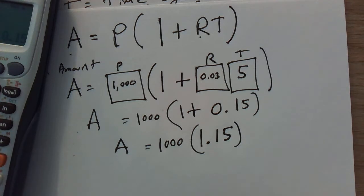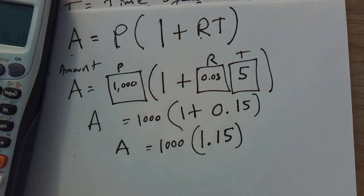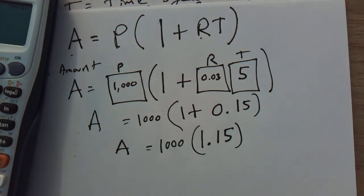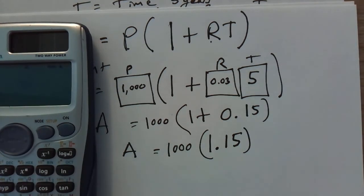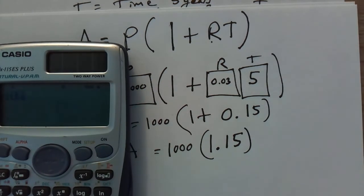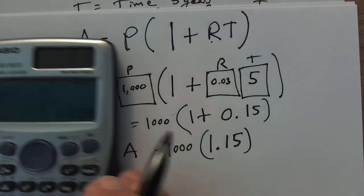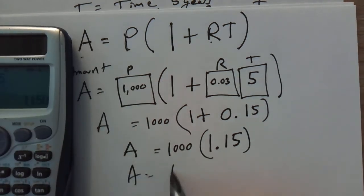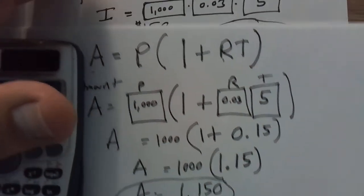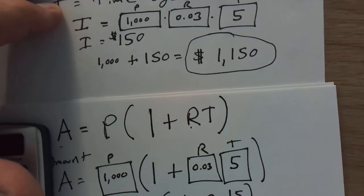The next step is we're going to multiply the 1,000 times 1.15 and that is equal to an A of $1,150 and as you may recall that is the same amount we got before.